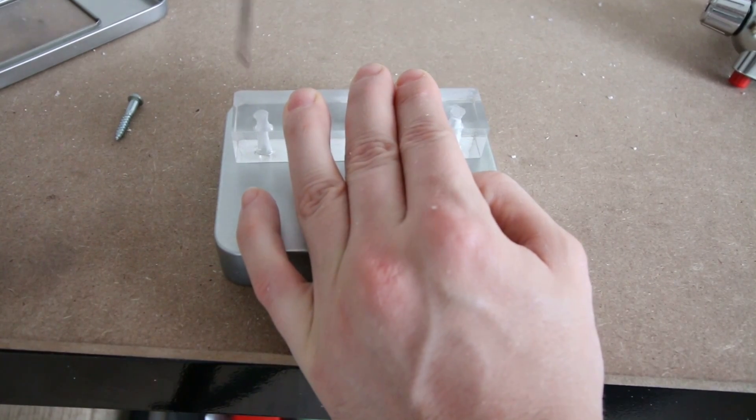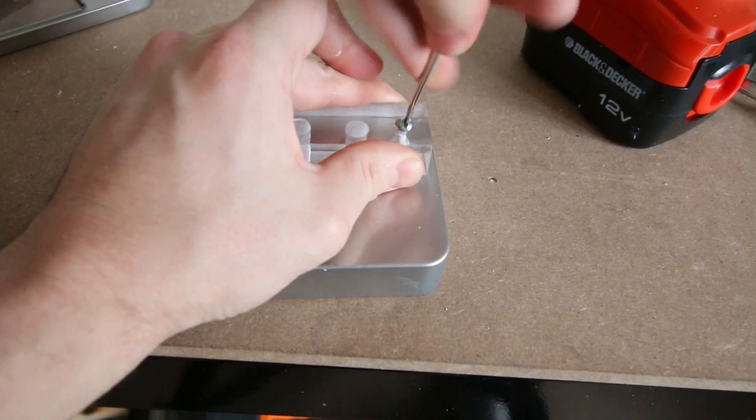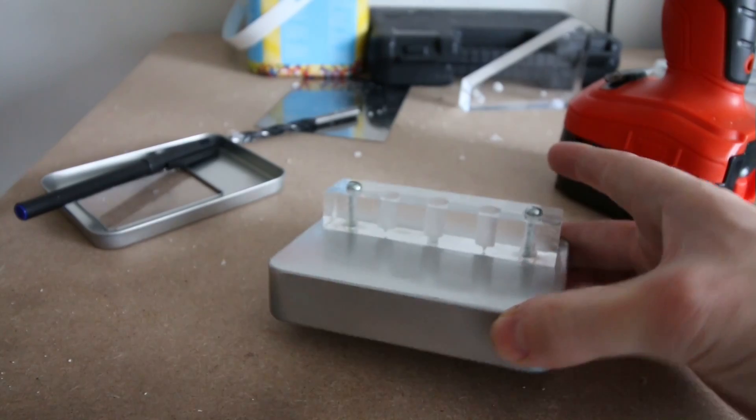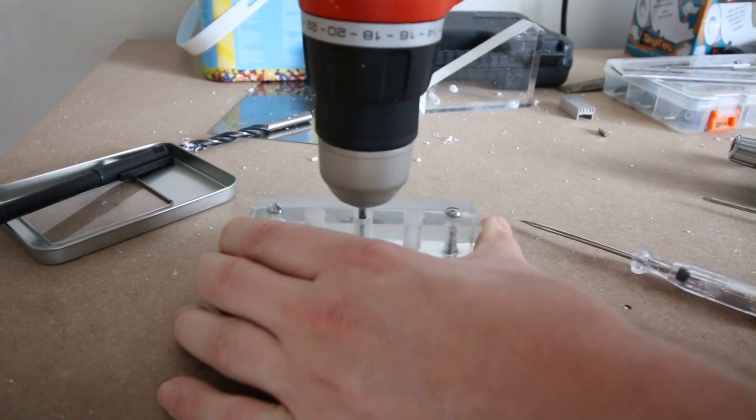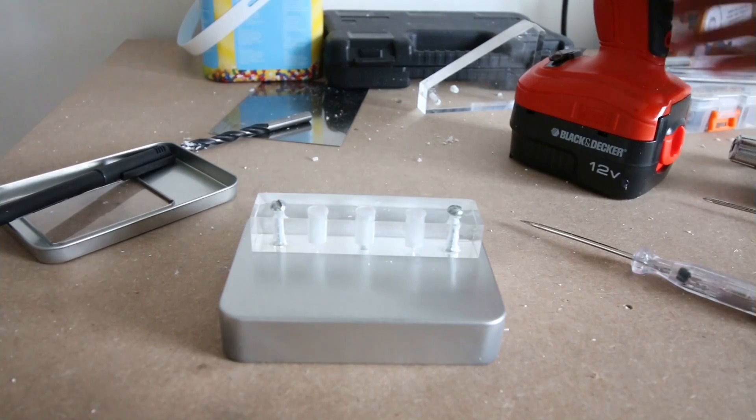I marked out and drilled two holes in the tin so I could screw in the acrylic. There we go. Also I drilled a hole through the centre of the tin so that the LED would fit through.